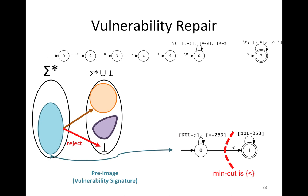The MinCut algorithm takes the vulnerability signature automata and finds the transitions that separate the initial state from all accepting states. We want to cut the graph — remove all transitions that allow a path from the initial state to the accepting state. When we find these transitions, we take all the characters on these transitions and delete them. This is the MinCut algorithm, and this is the patch we generate.